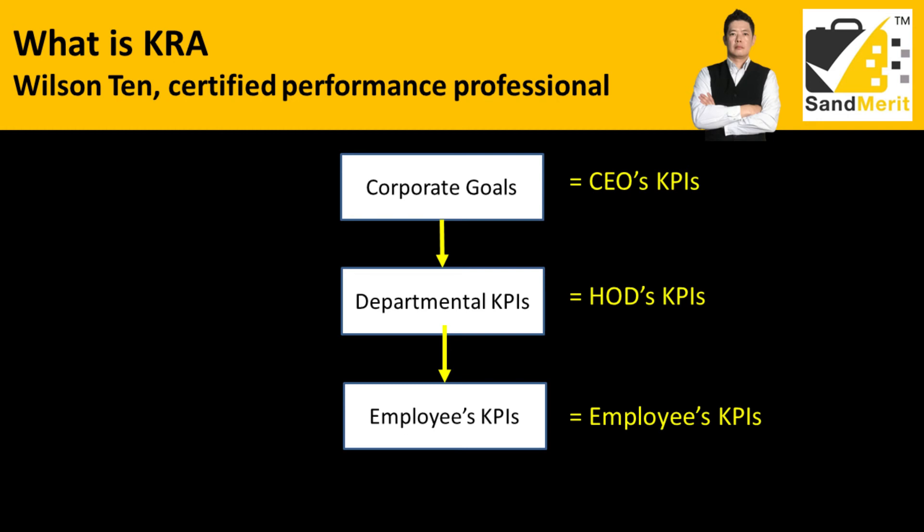A lot of SME bosses are very confused by all these terms defined by different trainers. To make it easy, forget about all these terms and just make it simpler for your organization. Just set your company goals, departmental KPI, and employees KPI. The corporate goals are the CEO's KPI, the departmental KPI is the HOD's KPI, and the last level is the employees' KPI.